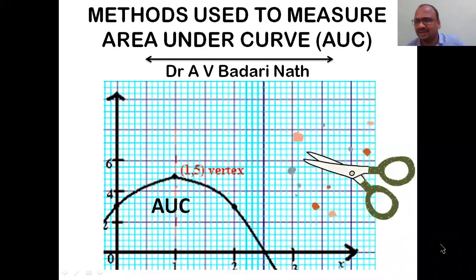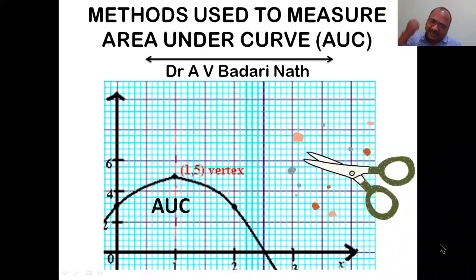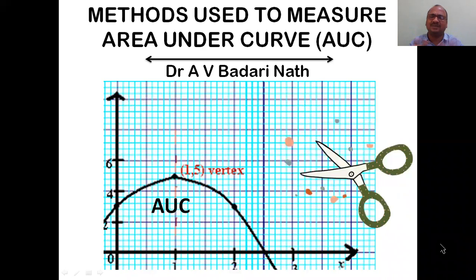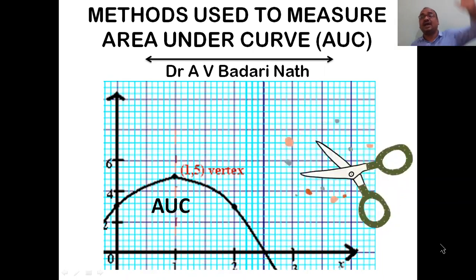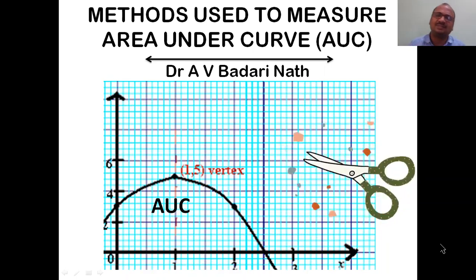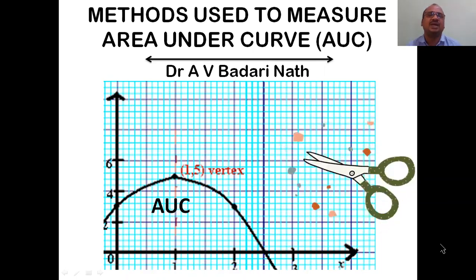For regular shapes we can measure by length into width, or by mathematical formula for a triangle or cylindrical shape. However, the AUC curve comes in an irregular way - sometimes like a hill, sometimes very high peaks, sometimes a narrow peak, sometimes a broad peak. That is the problem.